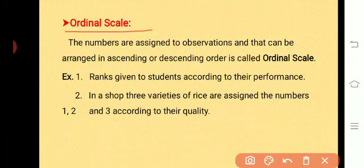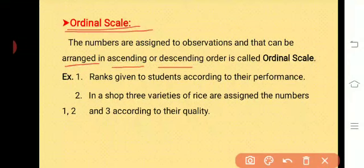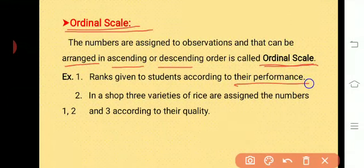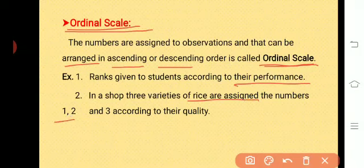The next concept is ordinal scale. The numbers assigned to observations that can be arranged in ascending (increasing) or descending (decreasing) order is called ordinal scale. For example, ranks given to students according to their performance, or in a shop where three varieties of rice are assigned numbers one, two, and three according to quality — number one for best, two for moderate, three for low quality. This is nothing but ordinal scale.